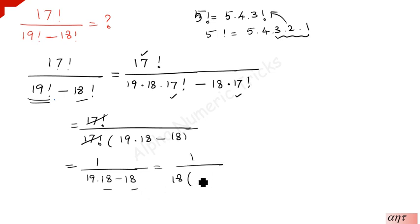1 over 18 times 19 minus 1, which is equal to 1 over 18 times 18, which is equal to... 1 over 18 times 18 is 324. That's your answer.